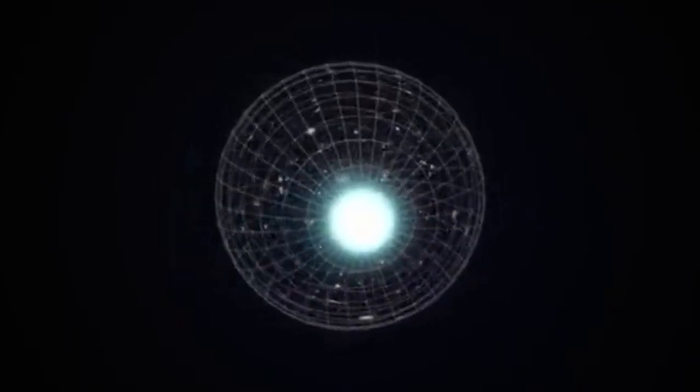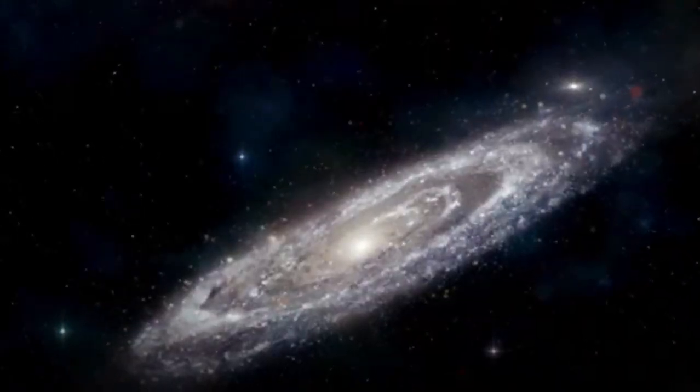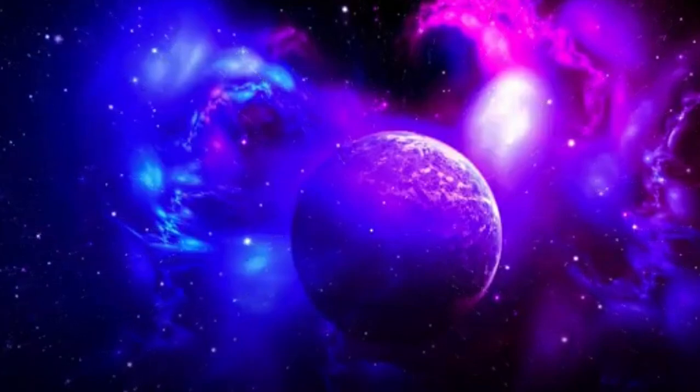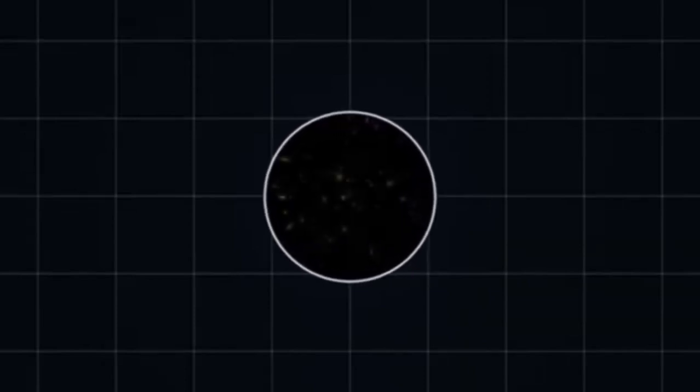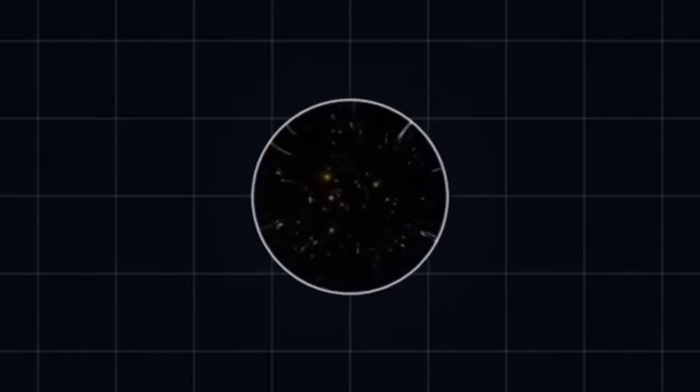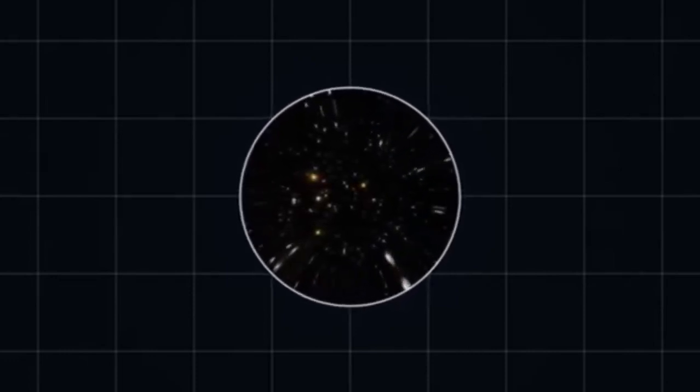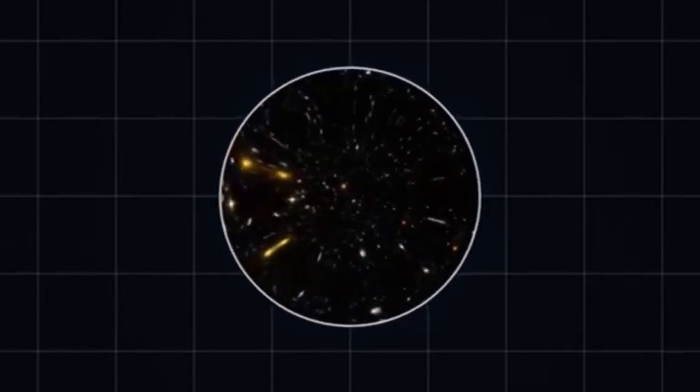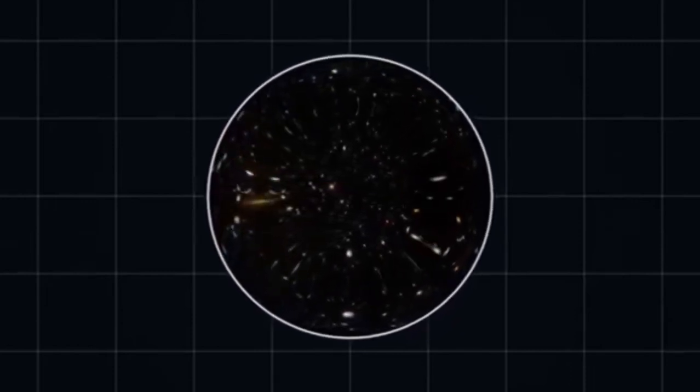In this model, our universe could be a three-dimensional brane embedded in a higher-dimensional space. The Big Bang, rather than being the beginning of time and space, might have been the moment our universe emerged from the collapse of a star in a higher-dimensional space-time, forming a black hole. This scenario suggests that everything we observe in our universe is confined within the event horizon of this higher-dimensional black hole. Such a perspective could potentially explain several cosmic phenomena, including the uniformity of the cosmic microwave background and the apparent flatness of the universe. It also raises profound questions about the nature of space, time, and information.